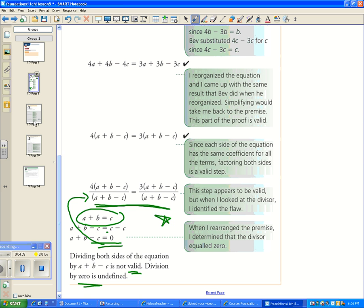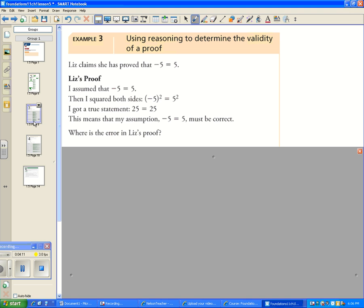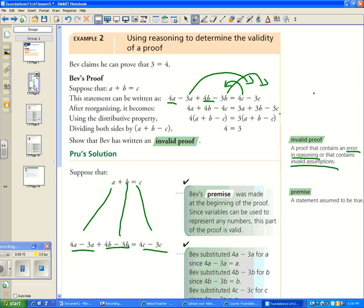So that was an example. Let's look at this. Was there an error in reasoning or was there invalid assumptions? In this case, that was an error in reasoning. Bev did not use sound mathematical facts or operations - he divided by zero, not allowed.